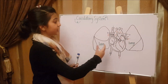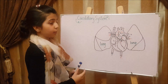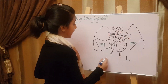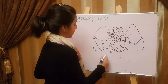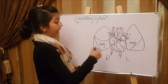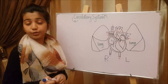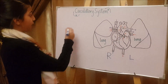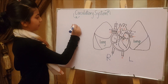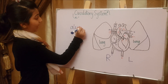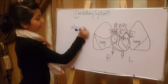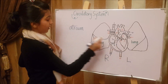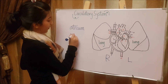Let's start with the structure of the heart. Our heart is divided into two parts: the left side and the right side. Each side contains two chambers, meaning four chambers in total. The upper two chambers are called the atrium, and the lower ones, which you can see right over here, are called the ventricles.